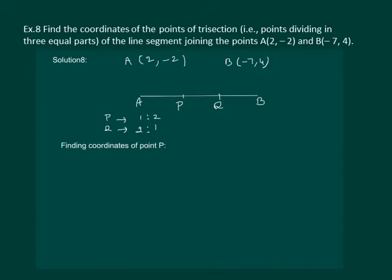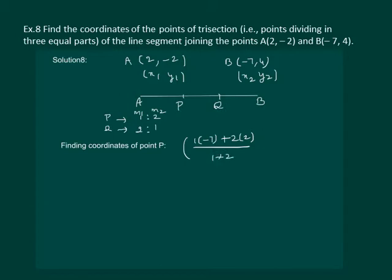Now using the section formula we can find the coordinates of point P. Here m1 is 1, m2 is 2, and we have x1, y1 and x2, y2. So the coordinates of point P will be (1×(-7) + 2×2) / (1+2) for the x-coordinate, and (1×4 + 2×(-2)) / (1+2) for the y-coordinate. This gives us the coordinates of point P as (1, 0).